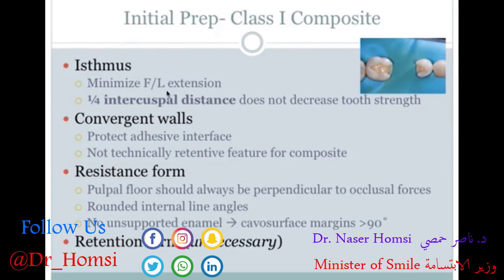The isthmus refers to the facial-lingual extension of the preparation design. Ideally it should be no more than one-quarter intercuspal distance — about 1 millimeter — so you don't reduce the strength of the tooth. As with everything, the preparation is ultimately determined by the bounds of the disease. Convergent walls help protect the adhesive interface and are more of a theoretical concept; they're not technically retentive for composite since it's bonded to tooth structure, but become more important for amalgam.